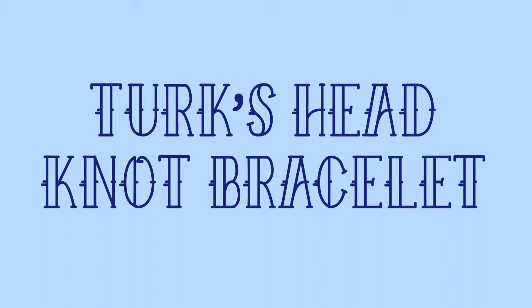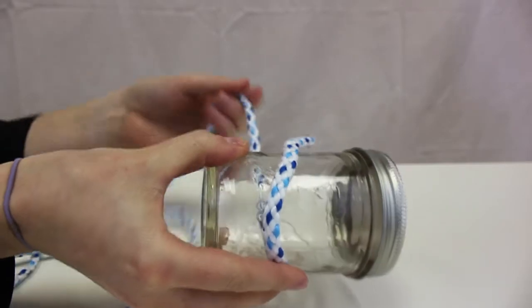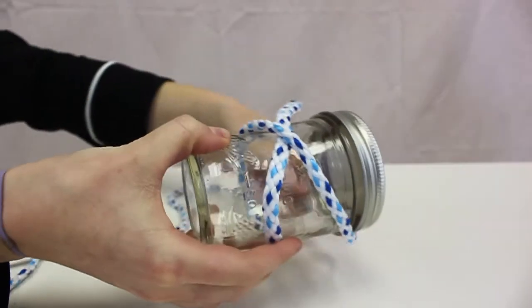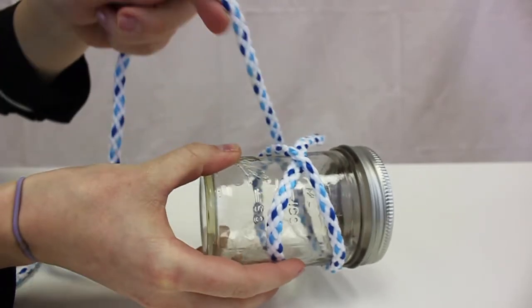Today we're going to show you how to do the Turks Head Knot Bracelet. All you need is your bracelet weaving cord. You can use a mason jar or tin to get this started as shown here, but we're going to just use our hands.